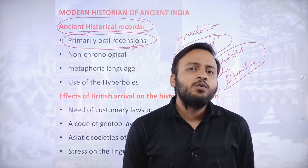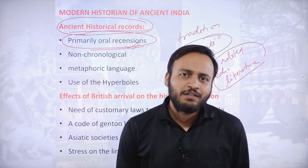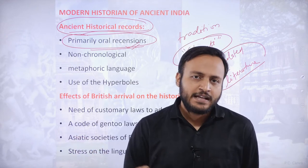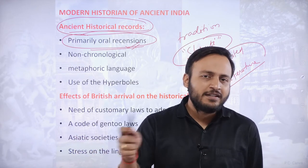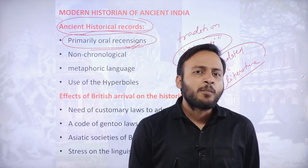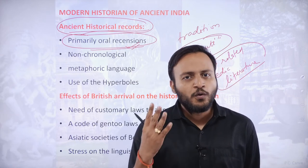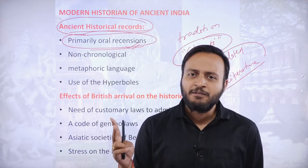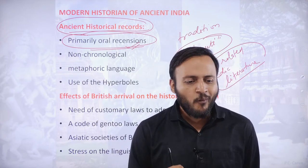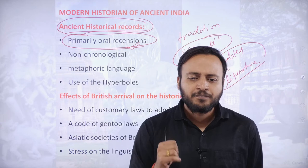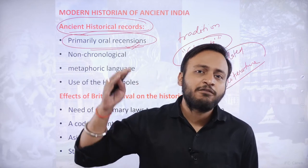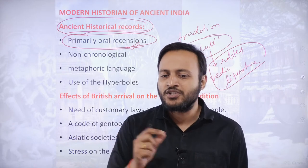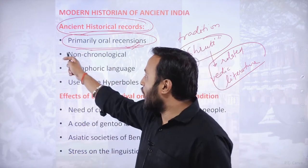Primary examples of oral recensions include the Vedas. There are different names and categories of Vedic literature — primarily the four Vedas: Rigveda, Samaveda, Yajurveda, and Atharvaveda. All of these have been transmitted from generation to generation through oral recensions.